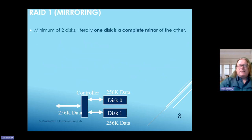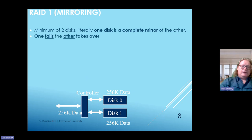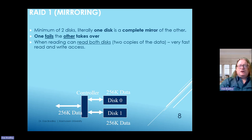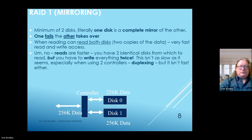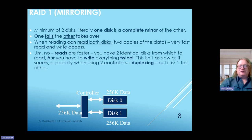RAID 1 is disk mirroring—a minimum of two disks where one is a complete mirror of the other. If one fails, the other simply takes over. When reading, you can read from both disks because there are two copies of the data. Reads are faster, but you have to write everything twice. It isn't as slow as it seems because you're using two controllers—a process called duplexing—but it isn't really fast either.